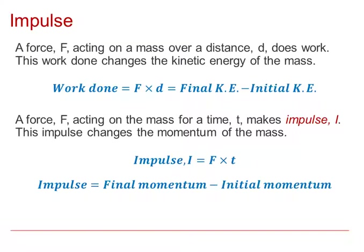However, we can consider the force F acting on a mass for a time T. When we consider the time that the force is acting for, we consider what is called an impulse, capital I. And it's this impulse that changes what's called the momentum of the mass. So impulse I is force times time, and impulse changes the momentum — so impulse is final momentum take away the initial momentum.